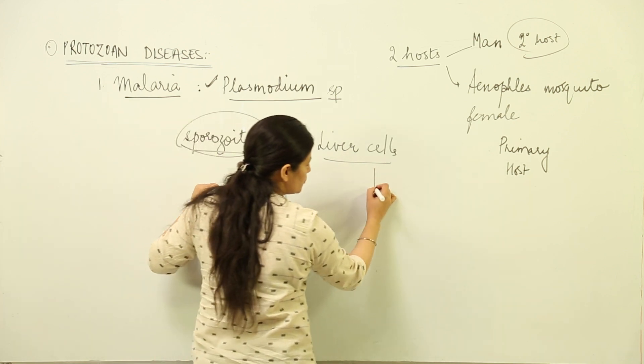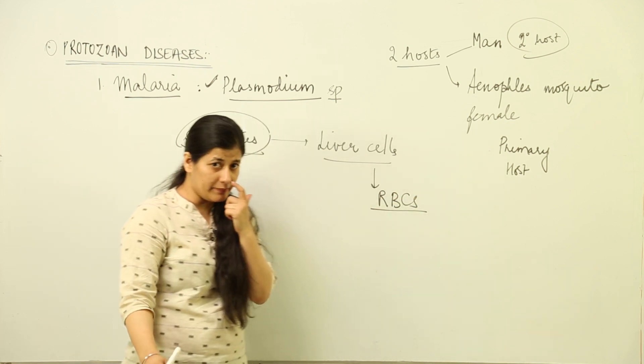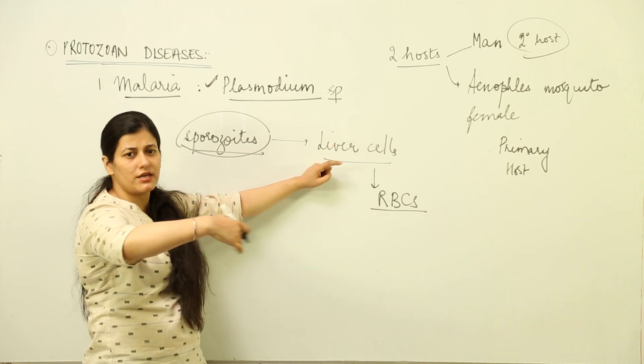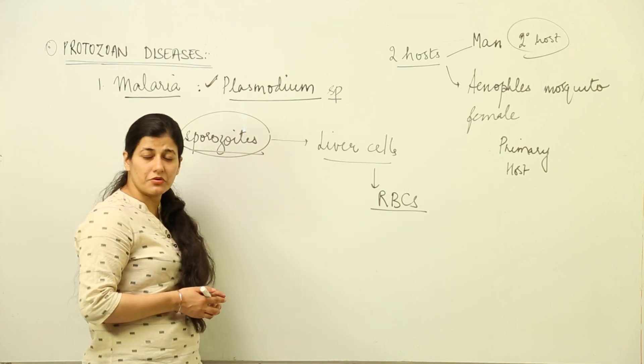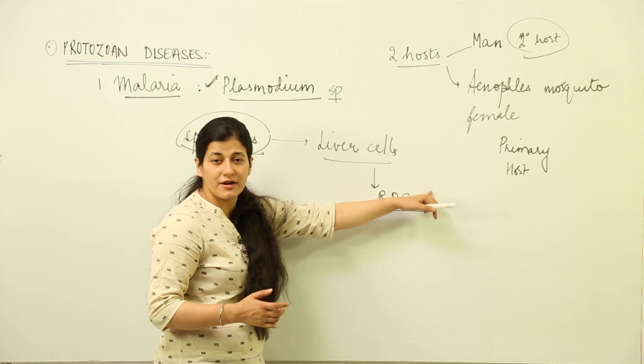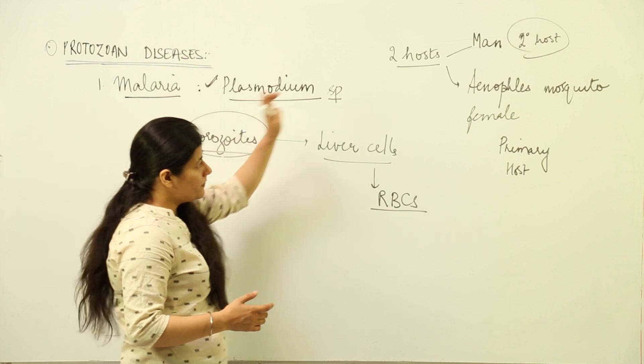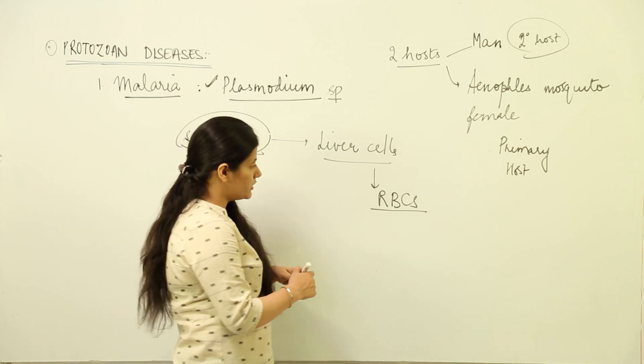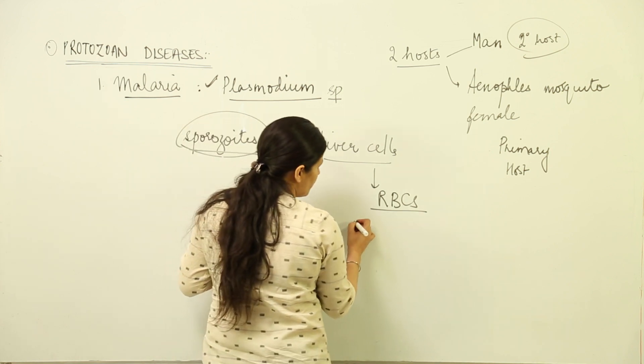Inside the liver cells, they divide asexually and go to RBCs. These sporozoites go through successive stages: merozoite, cryptomerozoite, megamerozoite, schizont, and trophozoites are formed. The RBCs become infected by these sporozoites which reached the human body through the agency of Anopheles.